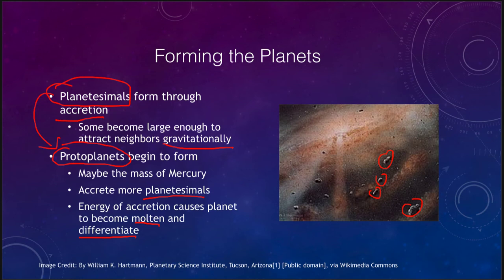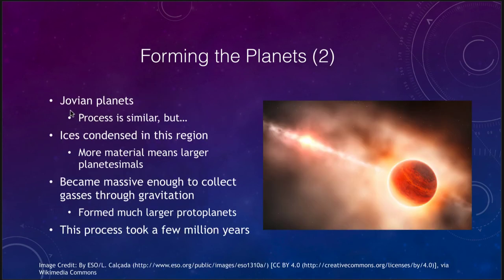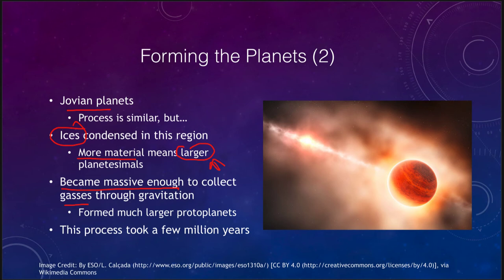This buildup could take millions or tens of millions of years, but is very short compared to the entire life of the solar system. In the outer solar system, the difference with the Jovian planets is that ices were able to condense, providing more material and therefore larger planetesimals. Eventually they became massive enough to collect hydrogen and helium gases through gravitation. The inner planets never became massive enough to do this — there simply wasn't enough material in the inner solar system to form a large enough planet to attract gases directly.